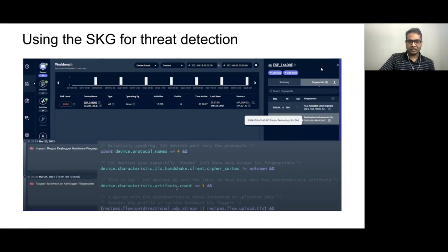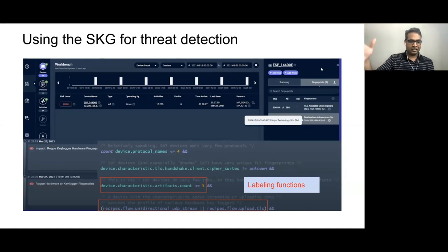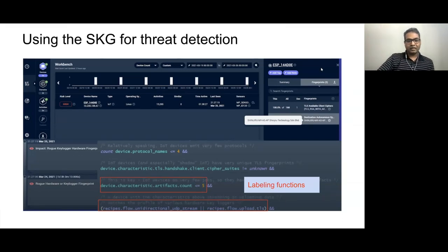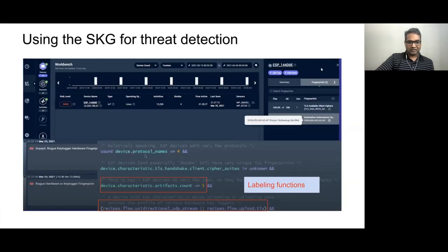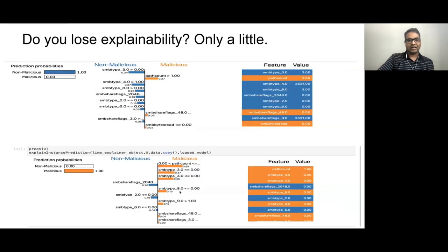At this point you might recognize that these heuristic conditions look like labeling functions — which allows us to extract a model using weak supervision and enhance the detection process further. That's where we tie the heuristics to the original data instead of just attaching them to the knowledge graph. For explainability, once we extract a model using weak supervision, we use LIME — it gives us a lot of explainability back. It's not as crisp as listing exactly five conditions, but we know which feature was relevant and why it crossed the threshold, and we explain that to the analyst.